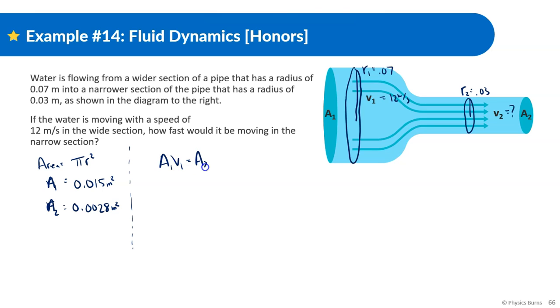Now that we found that, we could just plug into the formula. A1v1 is equal to A2v2. A1 is 0.015, v1 is 12. A2 is 0.0028, and we're looking for v2. So let's plug this in: 12 times 0.015 divided by 0.0028, and we get 64.29 meters per second. And it shows that it is faster, so it looks promising.